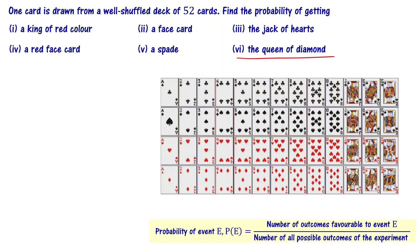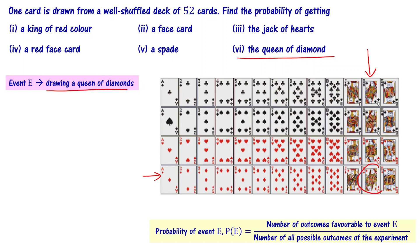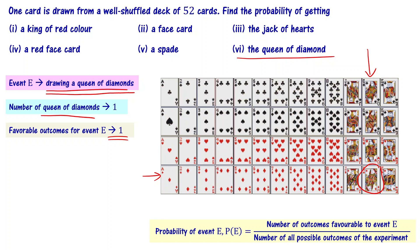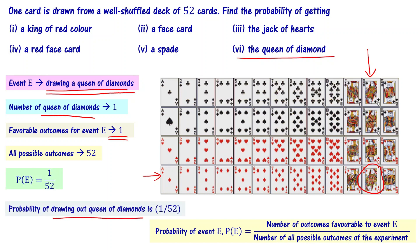What is the probability of getting a queen of diamonds? Event E is drawing a queen of diamonds. There is only 1 card that has both diamond and queen. So, the number of favorable outcomes for this event is 1, and all possible outcomes are 52. The probability is 1 by 52. The probability of drawing a queen of diamonds is 1 by 52.